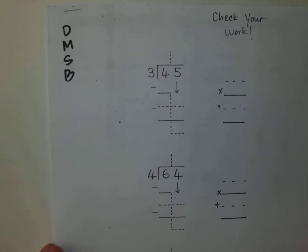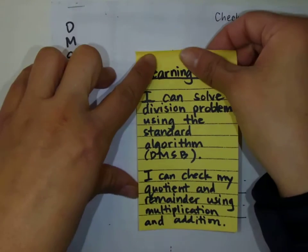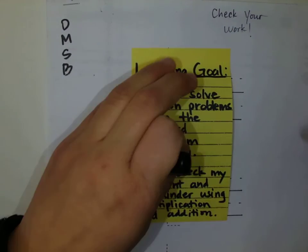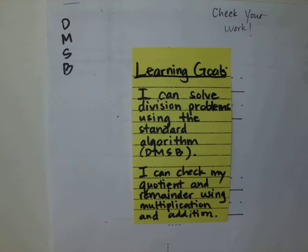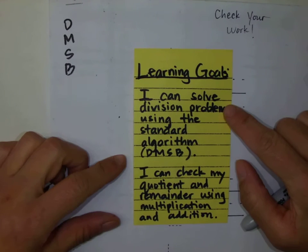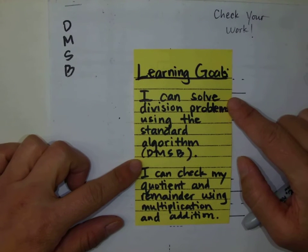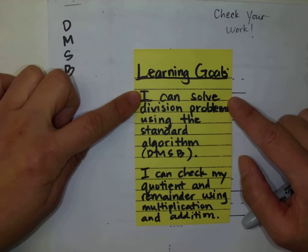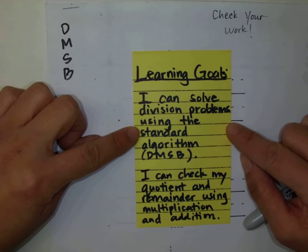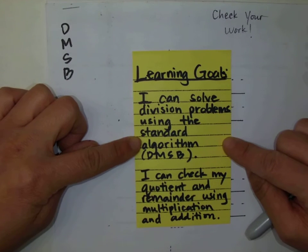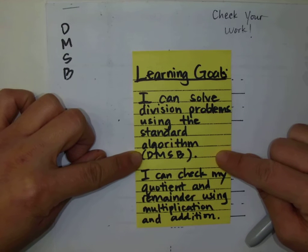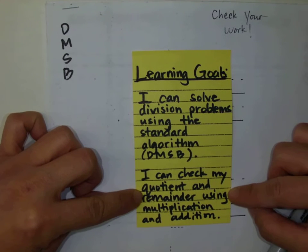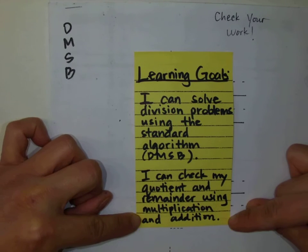The purpose of this video is to help guide you with the following learning goals. Today, at the end of this lesson, you should be able to say to yourself: I can solve division problems using the standard algorithm — that's the DMSB strategy. I can check my quotient and remainder using multiplication and addition.